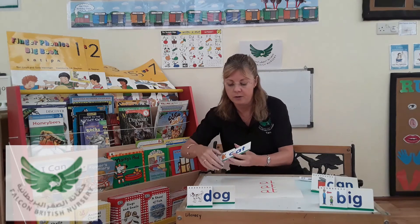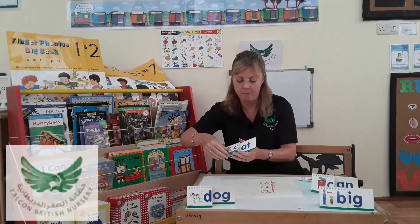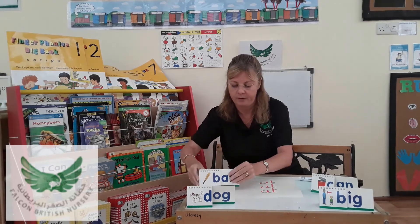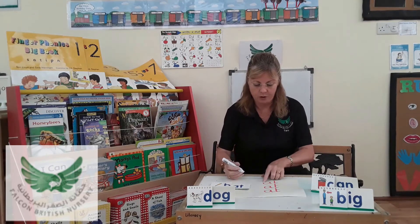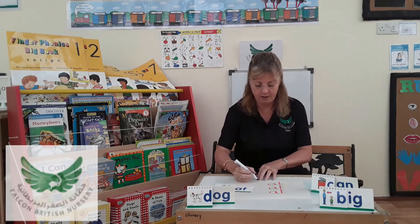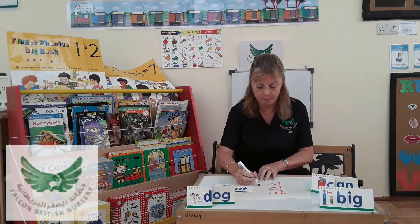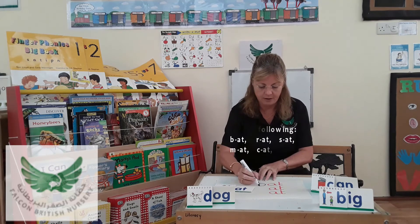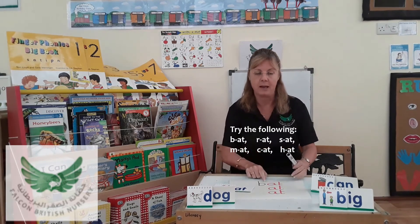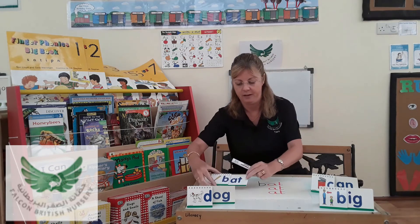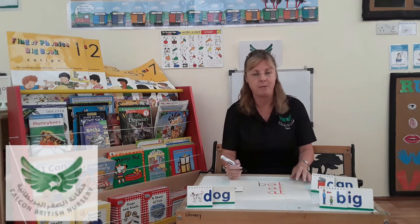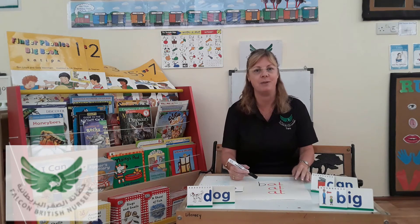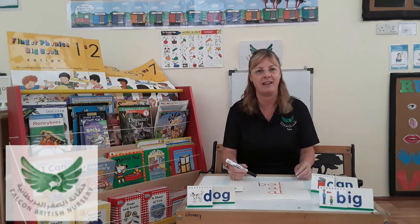We can also do this at home on a piece of paper. We have the word 'at' written on paper and we can put a letter in front. I'm going to put a letter b to make b-a-t. I hope you enjoy this at home and maybe you can have a fun activity with the children together. Thank you.